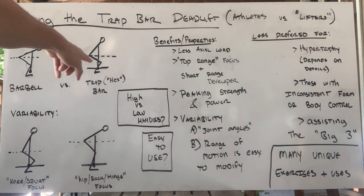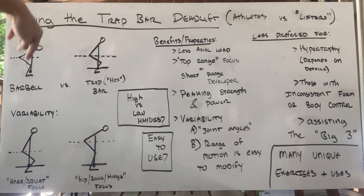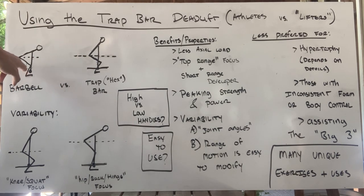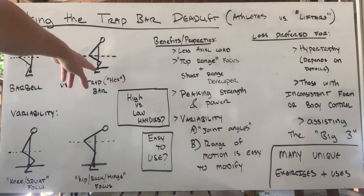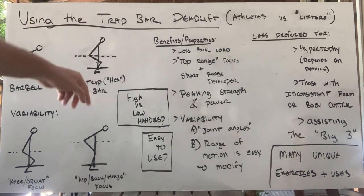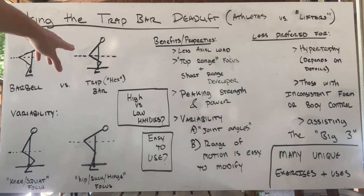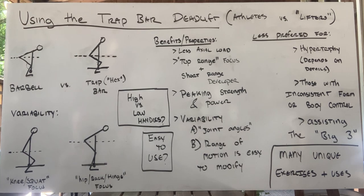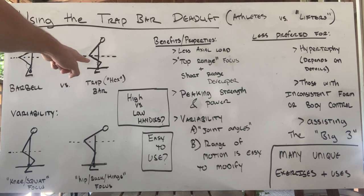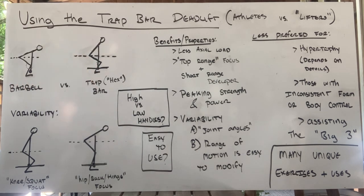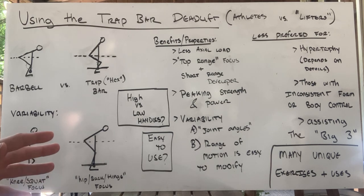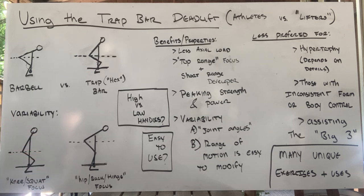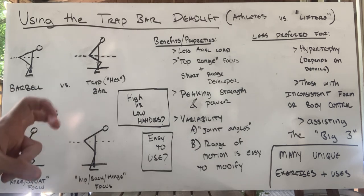With a trap bar, you have the freedom to move within the center of mass because there's an open space in the middle of the bar. You can stand so your shin goes right through the center of mass and you can stand a little bit more upright. Generally, people are going to be more upright with the trap bar and a little more bent over with the barbell. This is because you can stand in the middle of it — it becomes slightly squattier, a little more knee and hip, with a little more knee flex and less hip flex.